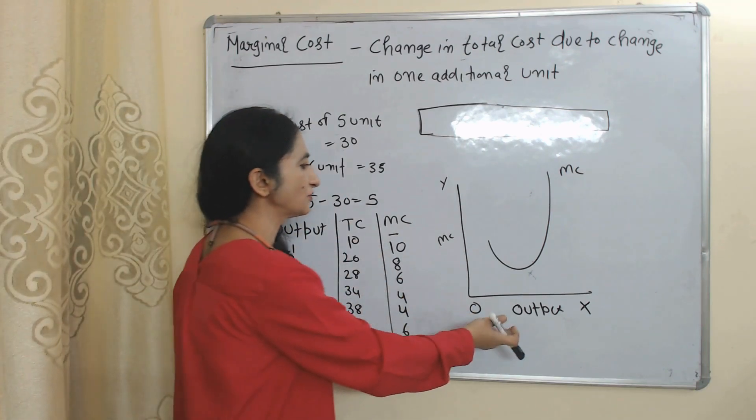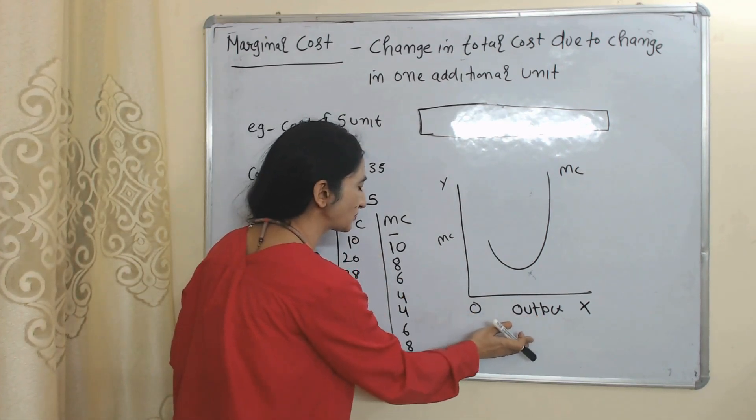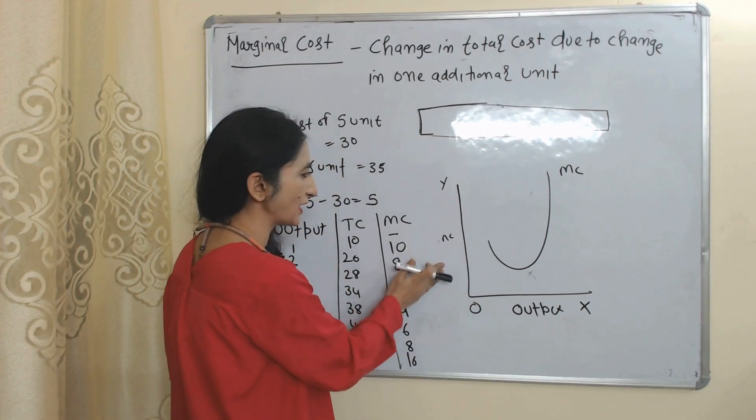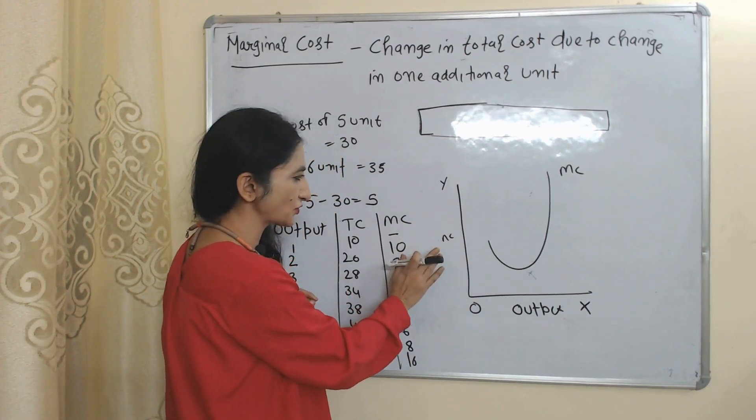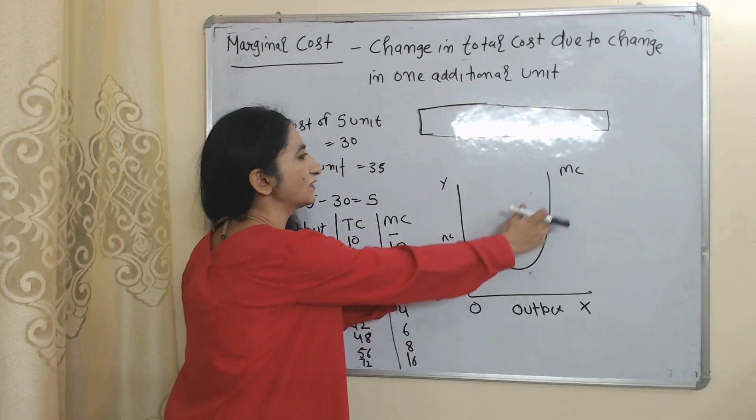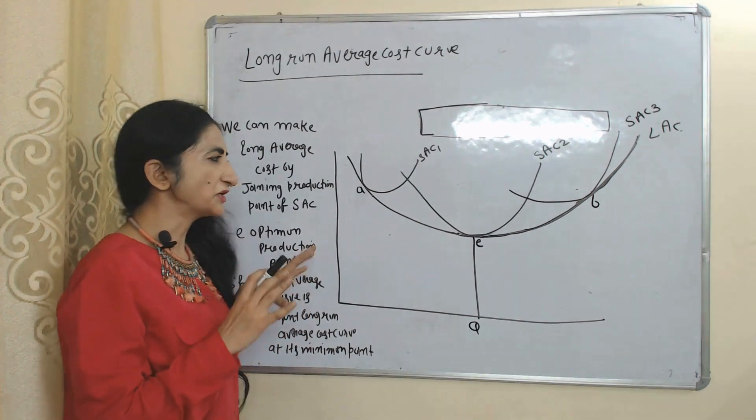In the diagram, on the x-axis we have output and on the y-axis we have marginal cost. This curve represents the marginal cost curve.